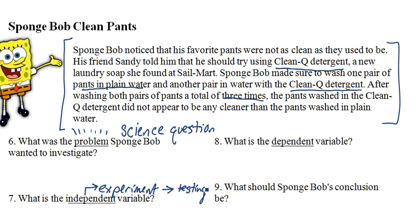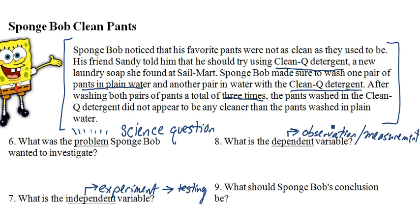For number eight, the dependent variable is usually some type of observation or measure. So we have to look back into the problem and see if we can find somewhere where SpongeBob made an observation or measurement to help answer his question.